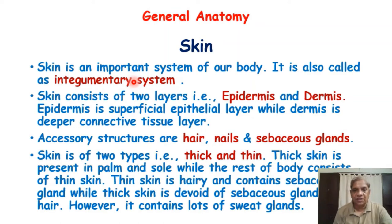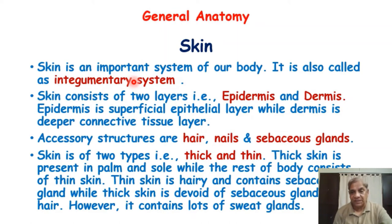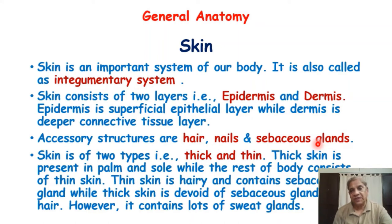The epidermis, being the superficial layer of the skin, gives rise to many derivative structures. These include hair — arising from epidermis and partly from dermis — nails, sebaceous glands, sweat glands through which we perspire, and the mammary gland present in the female breast, which is also a derivative of the skin.